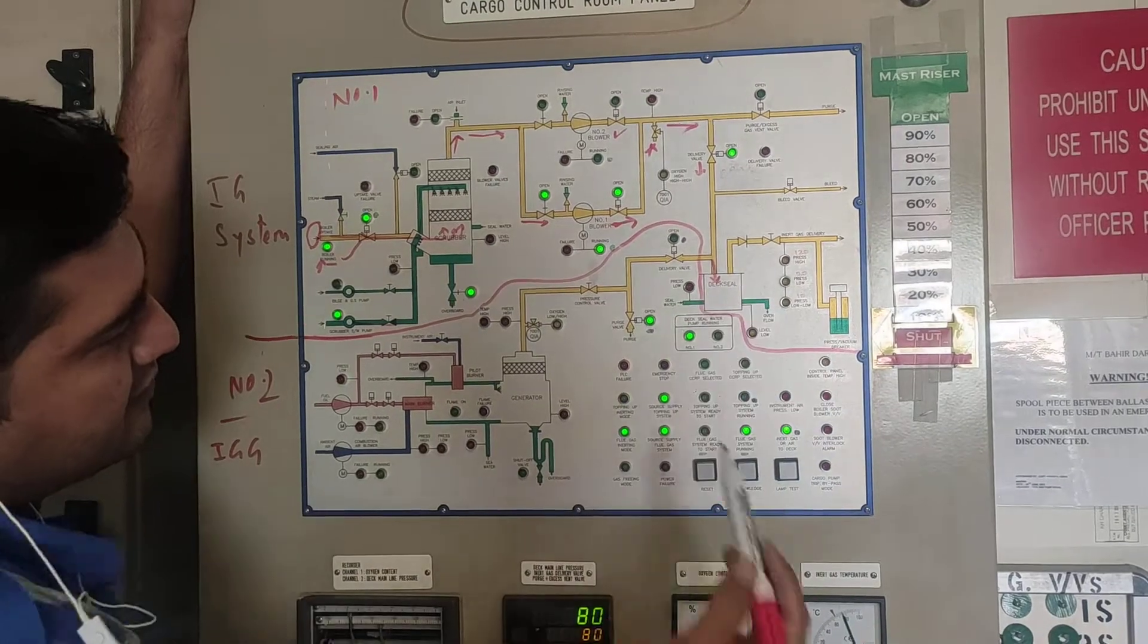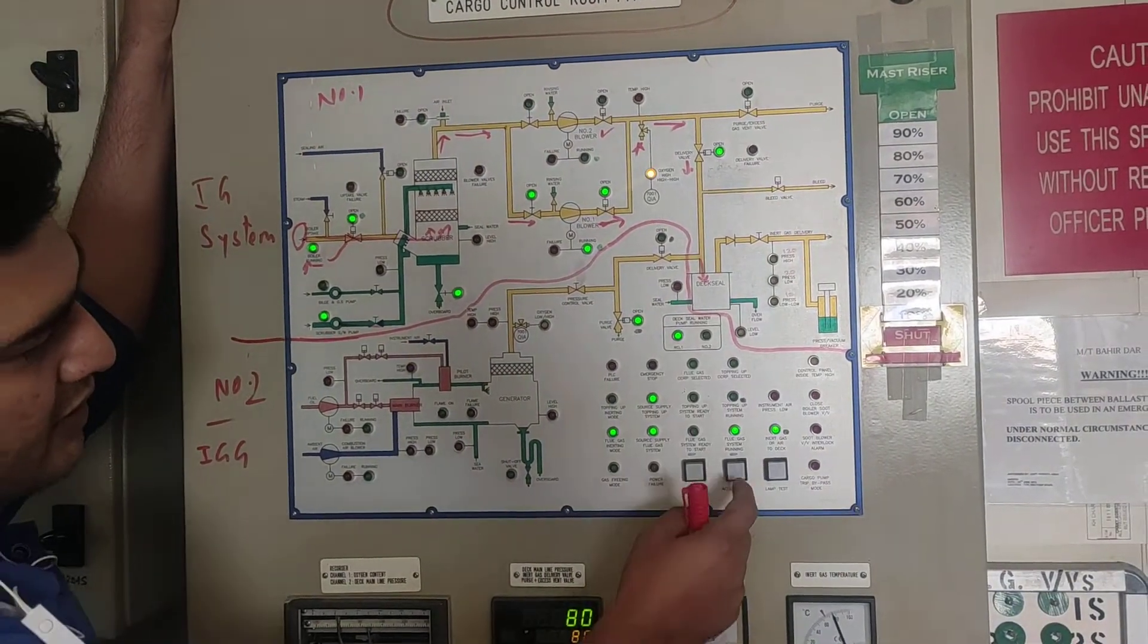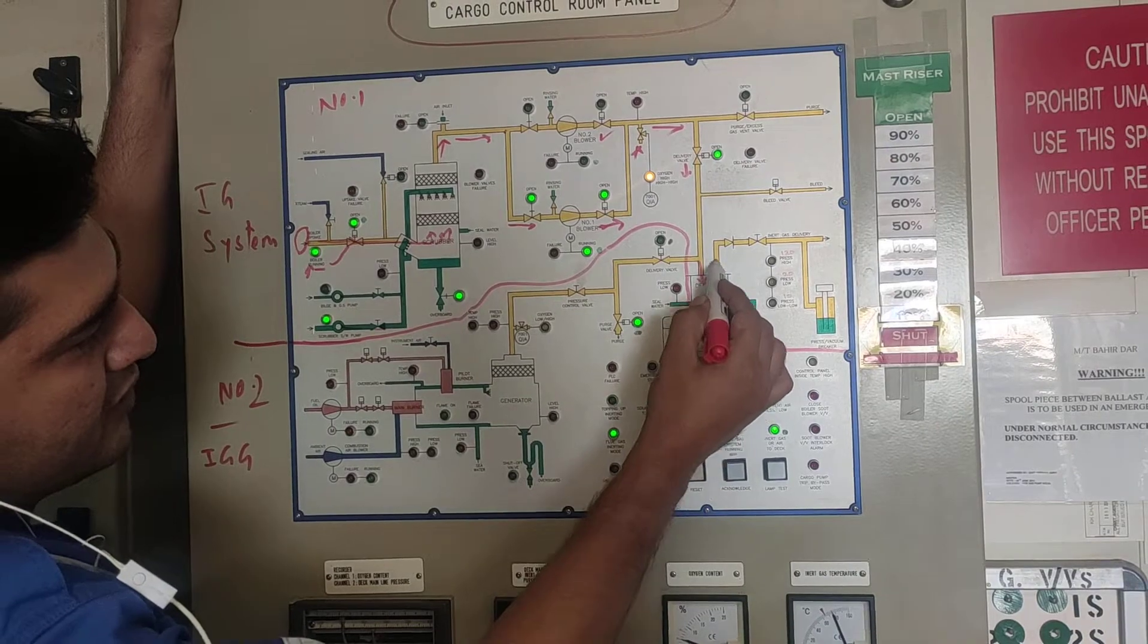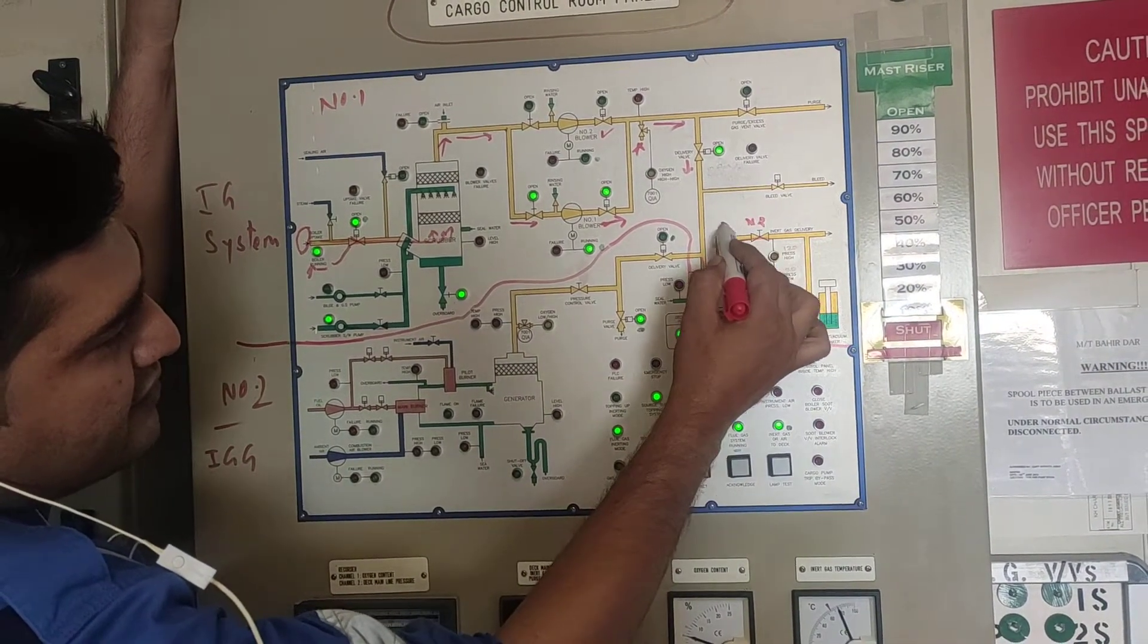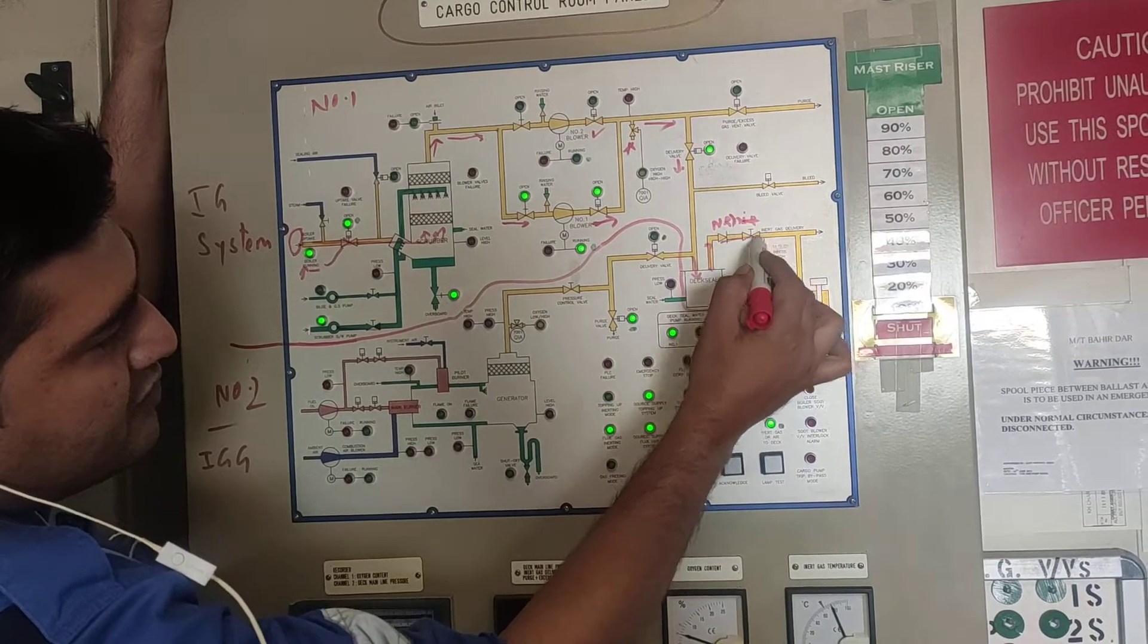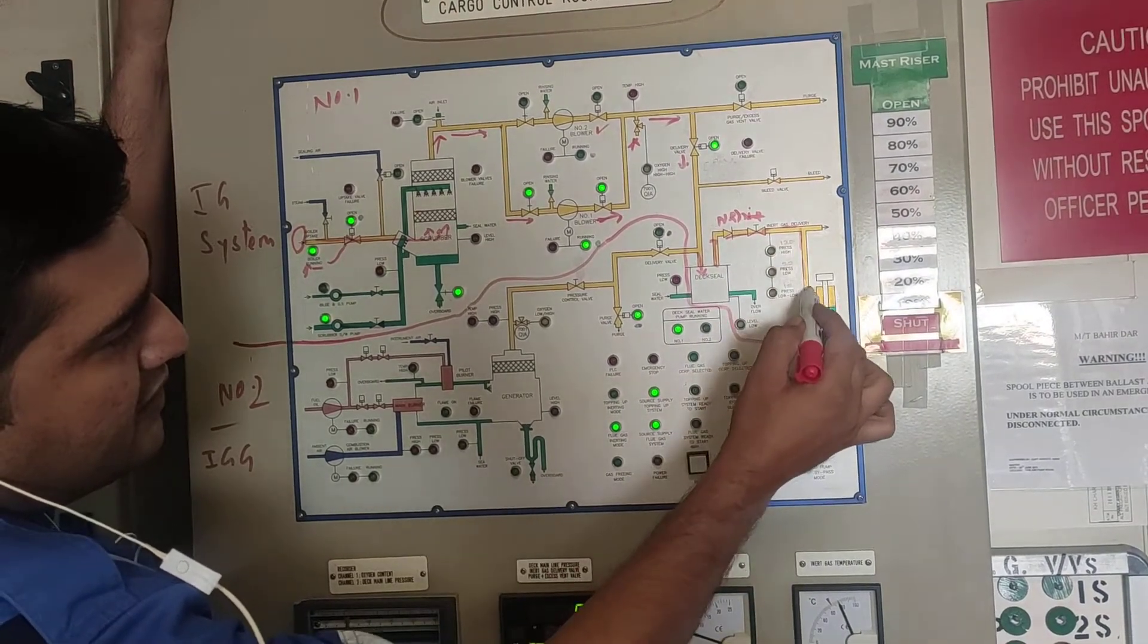Going into the deck seal. The video for deck seal is present, you can watch it. And then going out of the deck seal. And it is going through the NRV non-return valve which is here, non-return valve, the deck isolation valve. And it is going to the deck.